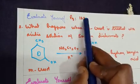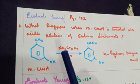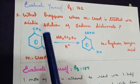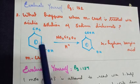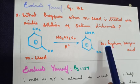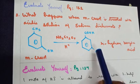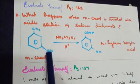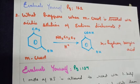Question two from the same page: what happens when meta-cresol is treated with an acidic solution of sodium dichromate? Cresol is benzene with both OH and CH₃ groups; meta-cresol has the OH and CH₃ at the meta position. When treated with sodium dichromate in the presence of H⁺, we get salicylic acid (or 4-hydroxybenzoic acid) — a benzene ring with both OH and COOH groups. The IUPAC name is 4-hydroxybenzoic acid. Thank you.